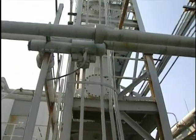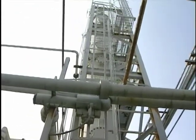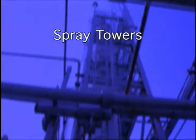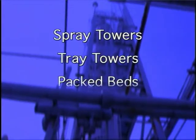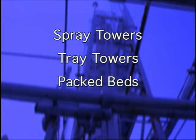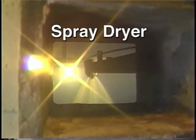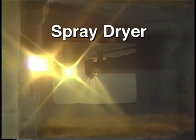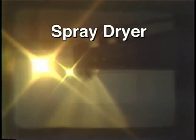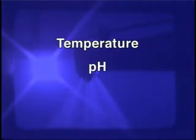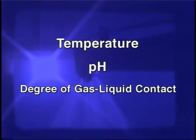To review, the common types of air pollution control absorption systems are spray towers, tray towers, and packed beds, all of which are followed by mist eliminators that remove final droplets. Another type of absorber, the spray dryer, uses fabric filters and electrostatic precipitators to remove particles. The control efficiency a device has in capturing contaminants is affected by temperature, pH, and the degree of gas-liquid contact.